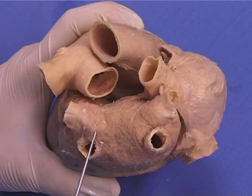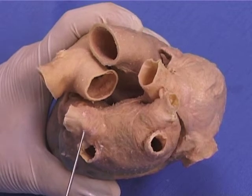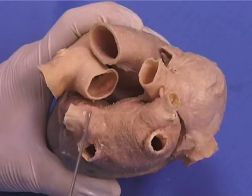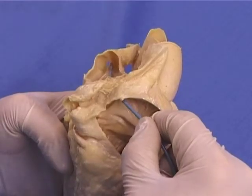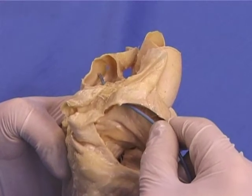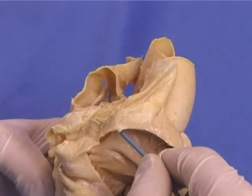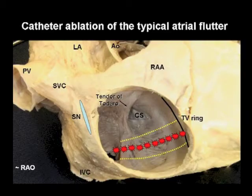Catheter ablation of the atrial fibrillation. Pulmonary vein isolation is one of the most common methods of catheter ablation of atrial fibrillation, which is carried out according to electrophysiological or anatomical criteria. This procedure entails an electrical isolation of the ectopic foci of the muscular fibers which are located in the ostia of the pulmonary veins. Pulmonary vein circumferential isolation is created by successive radiofrequency applications around one or several veins. Additional ablation lines may be performed to reduce the risk of macro-reentrant atrial tachycardias.